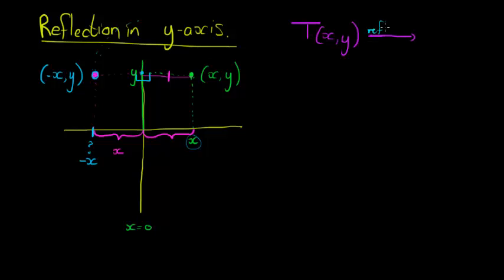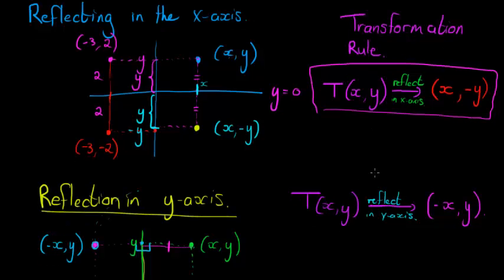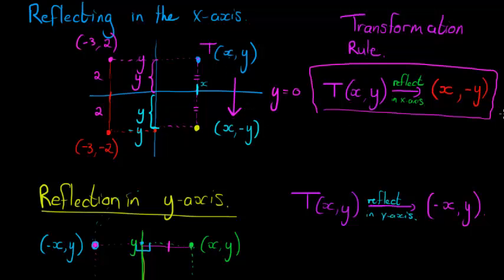The transformation rule for 'reflect in y-axis' is: (x, y) → (−x, y). Is it important to study these transformation rules off by heart? It might be helpful but it's not necessary. All you need to do is draw a quick sketch, plot any point in the first quadrant, and then see what happens to that point when you apply the transformation. You'll be able to figure out the rule from there.